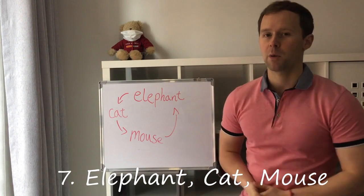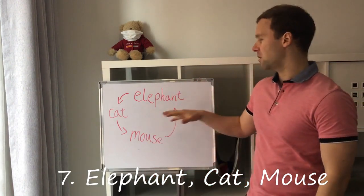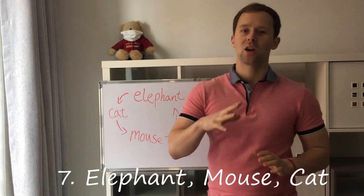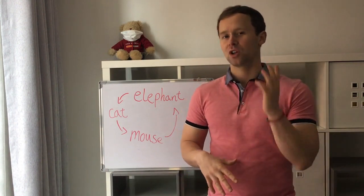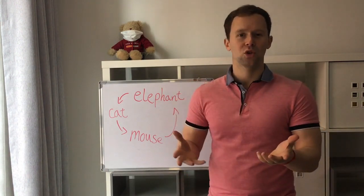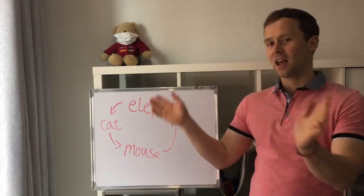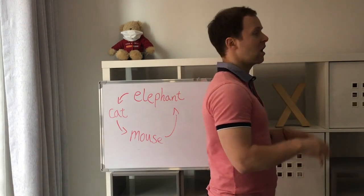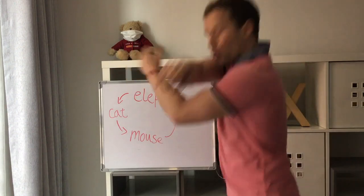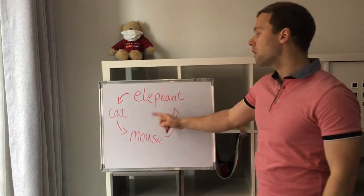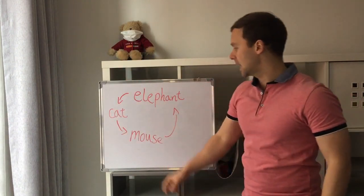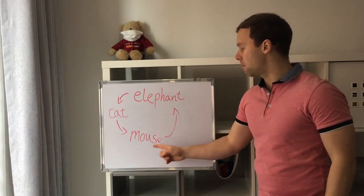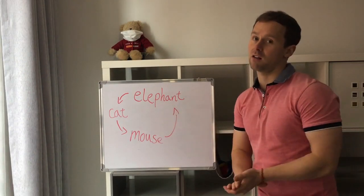Our last variation of rock, paper, scissors is Elephant, Mouse, Cat. This game is very similar to Bear, Ninja, Hunter, but perhaps you are teaching younger children and you don't want to use the hunter or ninja. The game is very simple. Students will stand back to back — three, two, one. This time, the elephant will stomp on the cat, the cat will catch the mouse, and the mouse will scare the elephant.